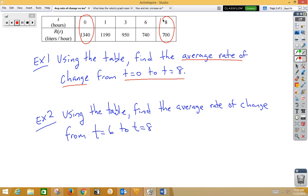If we go ahead and set up our slope, we would have seven hundred minus thirteen forty over eight minus zero. Seven hundred minus thirteen forty would be negative six forty. Eight minus zero would be eight. Now, AP doesn't make you reduce, but this is a fairly easy one to reduce. That would be negative eighty. Since the original table was in liters per hour and we just found a slope, that would be liters per hour per hour or per hour squared.